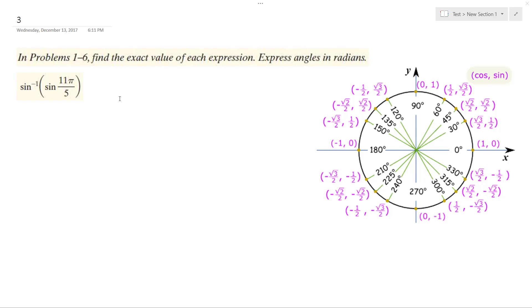Alright, so we want to figure out what the inverse sine of the sine of 11 pi over 5 is. This can be broken down to pi over 5 plus 10 pi over 5.